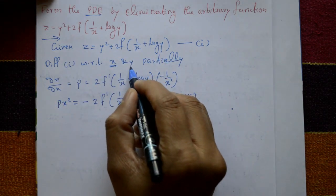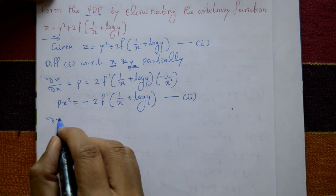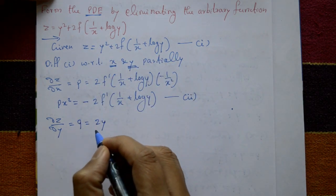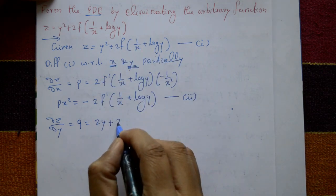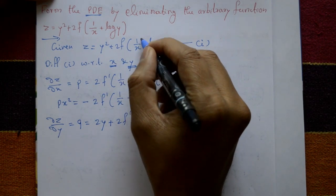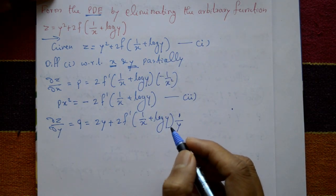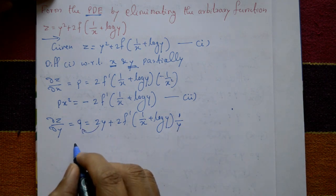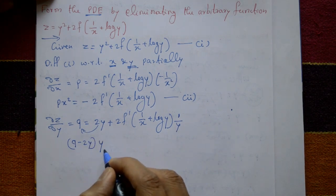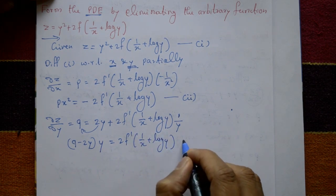Again, differentiate equation 1 with respect to y, with x treated as a constant. dz/dy equals q. With respect to y: 2y plus 2f dash of (1/x + log y), and differentiating log y gives 1/y. Shifting: (q minus 2y) times y equals 2f dash of (1/x + log y). Call this equation number 3.